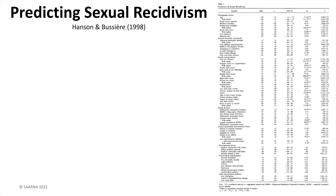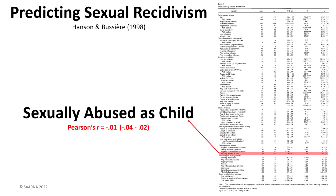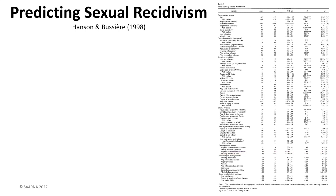Although many researchers and professionals comment upon things like denial or childhood issues of sexual abuse, these factors were not associated with sexual offending. Factors with strong associations provided a pool of potential items.